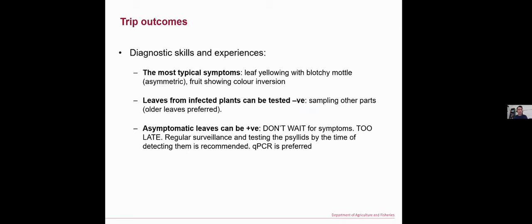The outcomes from my trip regarding diagnostic skills: the most diagnostic symptom for African citrus greening disease on leaves is yellowing with blotchy mottle that is asymmetric, and on fruit it is color inversion. Because it takes time for CLaf to spread to other parts of the plant, sometimes you can get a negative result from a leaf taken from an infected plant — in that case, older leaves are preferred for sampling and testing. It also takes time for infected plants to show symptoms, so asymptomatic leaves can test positive. The lesson: don't wait to see symptoms because by then it may be too late. Regular surveillance and testing of psyllids is recommended, and qPCR is preferred because it is more sensitive than conventional PCR.